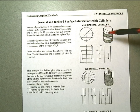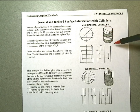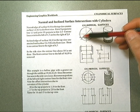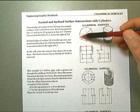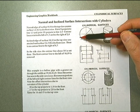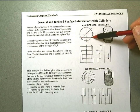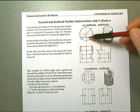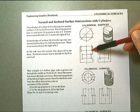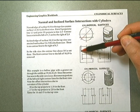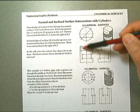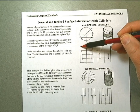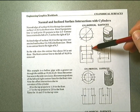Normal incline surface intersections with cylinders require us to number the points that are on the cylindrical surface, transfer those to the views, so that we can determine where they are as a contour element.